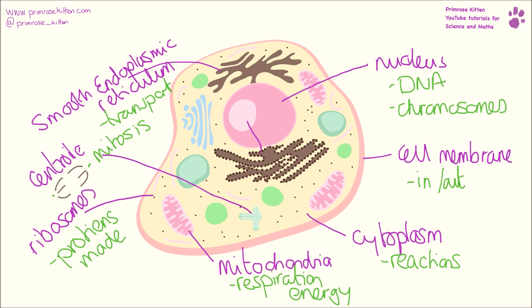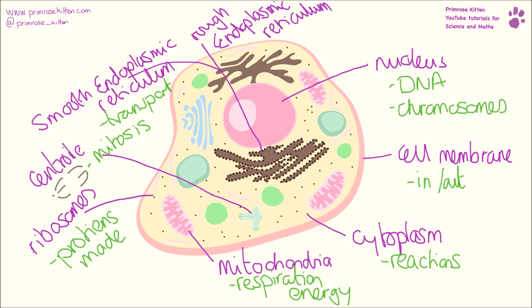This one here, which looks like the smooth ER but has ribosomes dotted all around the outside, is the rough endoplasmic reticulum. Like the smooth endoplasmic reticulum, this is responsible for transporting newly made proteins, newly made enzymes, all around the cell — and doing lots of different things.